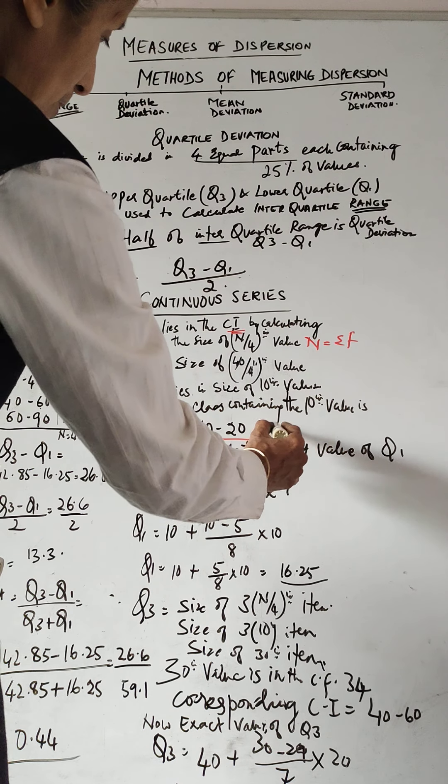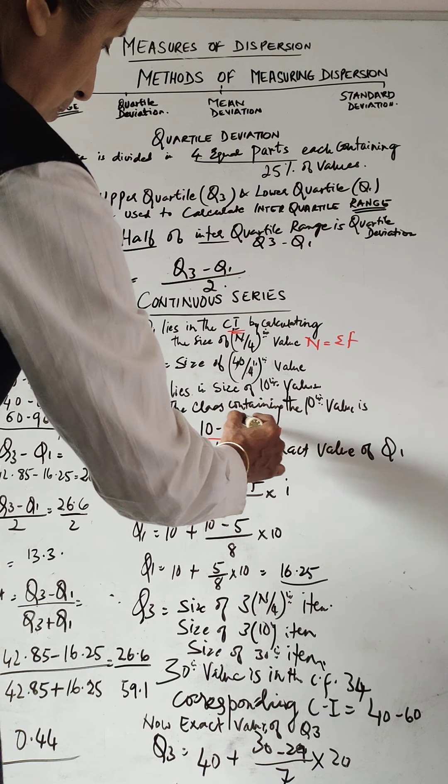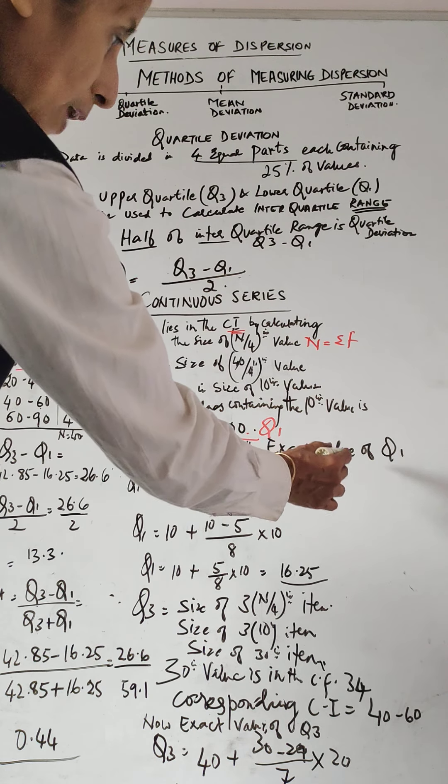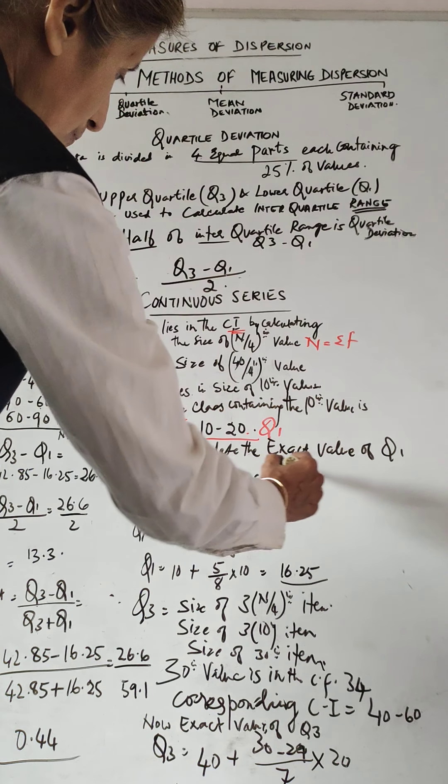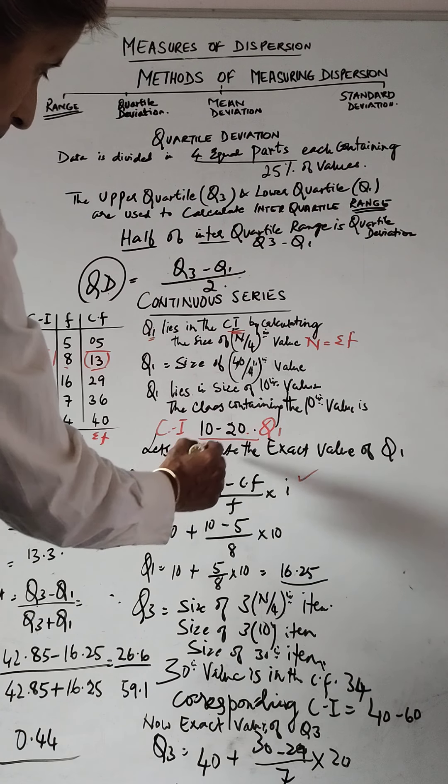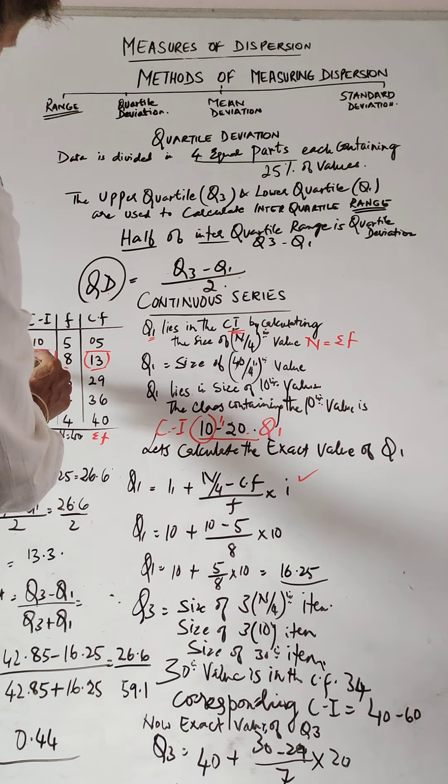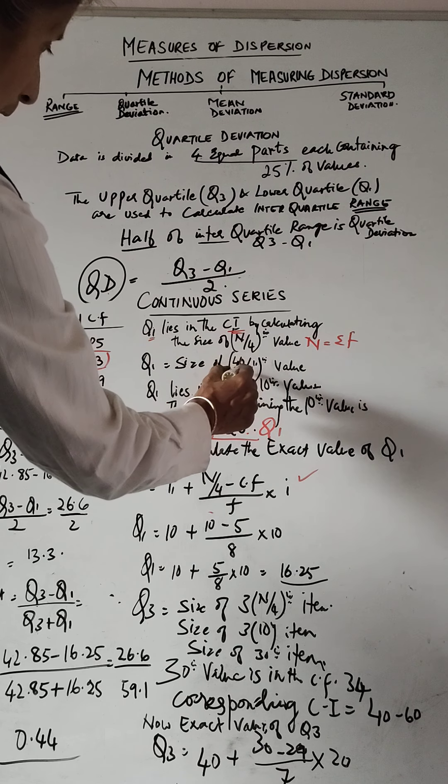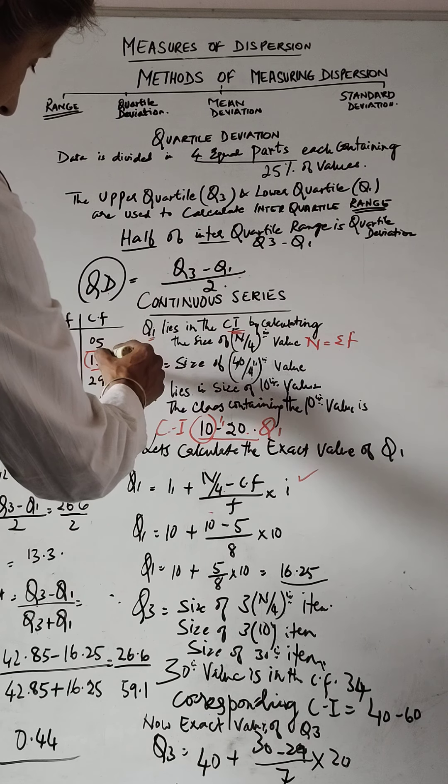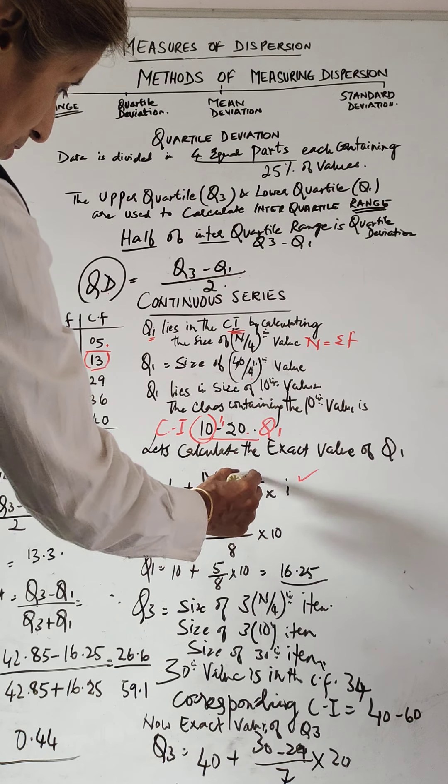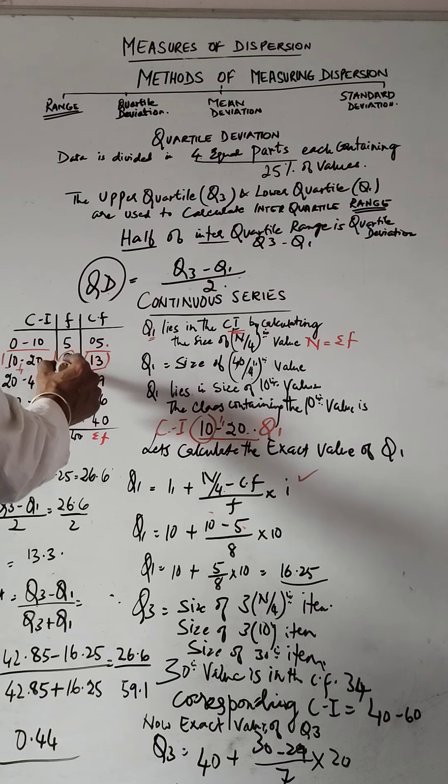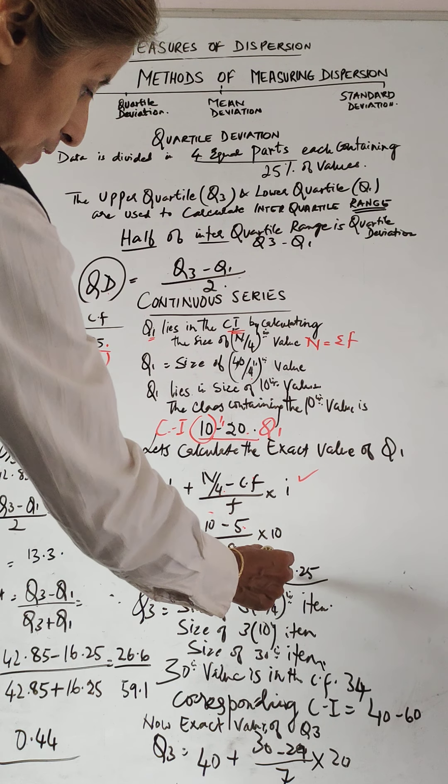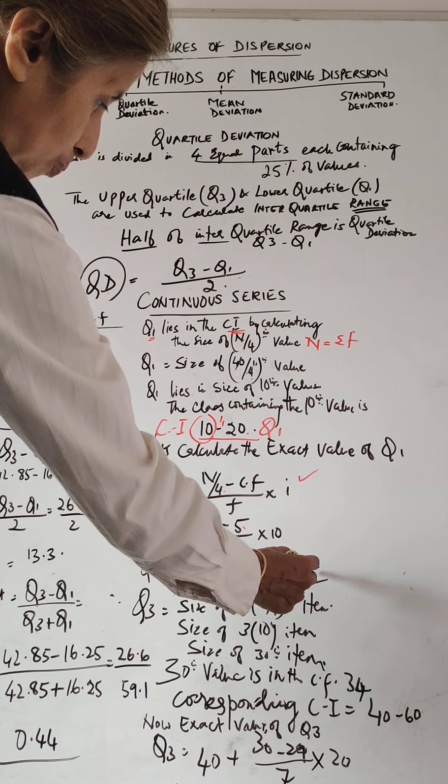Now let's calculate the exact value of Q1. This is the formula: Q1 equals L1 plus n by 4 minus cumulative frequency divided by frequency into i. L1 is 10, n by 4 is 10, cumulative frequency just before that is 5, and the frequency of the first quartile class is 8. So 10 plus 5 by 8 into 10 equals 6.25. So 10 plus 6.25 is 16.25, which is Q1.